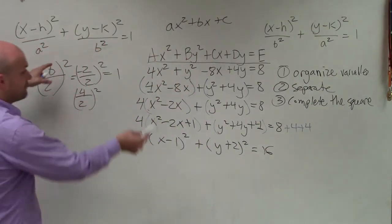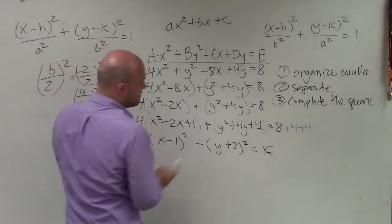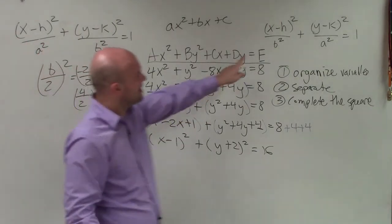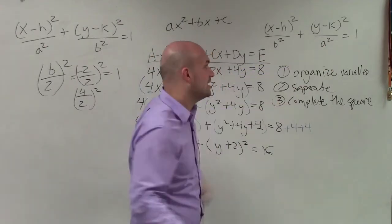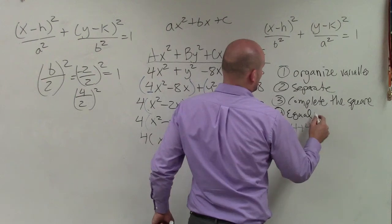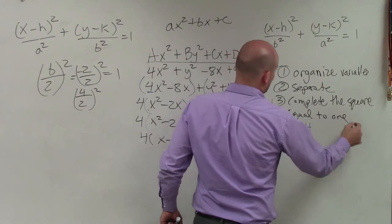Now, again, we're almost there. You can see now I have my two binomial squareds. The last part is now to go ahead and rewrite them to make sure you have it's equal to 1.